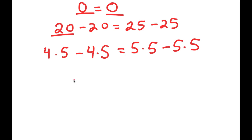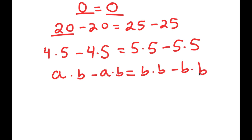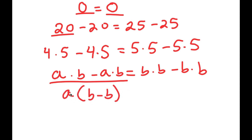If I have something in the form a times b minus a times b is equal to b times b minus b times b, notice how we can simplify this by factoring out the greatest common factor. From my left-hand side, we have a greatest common factor of either a or b, so I'm going to rewrite this as a times b minus b — I factored out a. From my right-hand side, I'll factor out b, so I get b times b minus b.